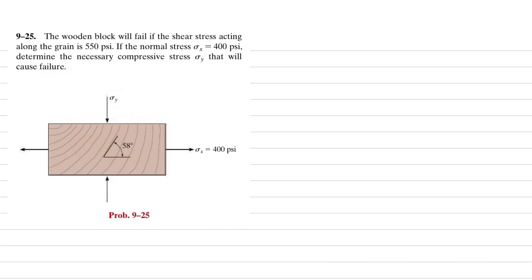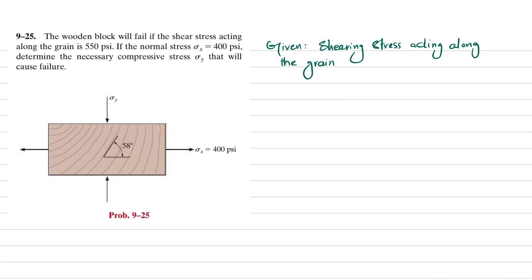In the given data: the shear stress acting along the grain is the transformed shear stress, tau_x'y', which equals 550 psi. Also given, the normal stress in the x-direction, sigma_x, is 400 psi.